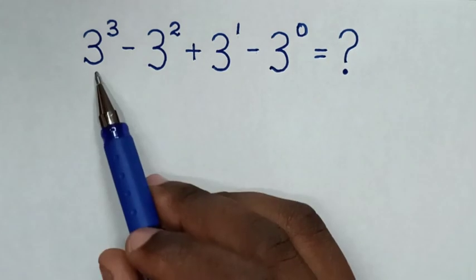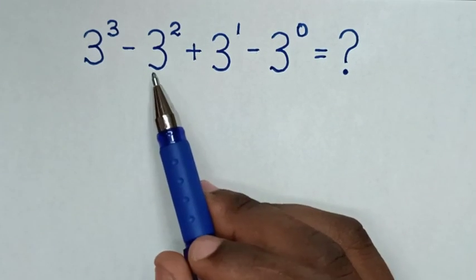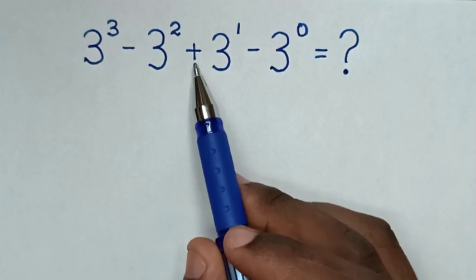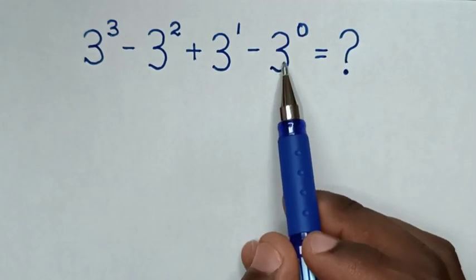Hello, let's work out 3³ - 3² + 3¹ - 3⁰.